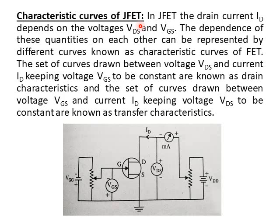Characteristic curves of JFET. In JFET, the drain current ID depends on the voltages VDS and VGS. The dependence of these quantities on each other can be represented by different curves — the characteristic curves of FET. The set of curves drawn between voltage VDS and current ID, keeping voltage VGS constant, are called drain characteristics.